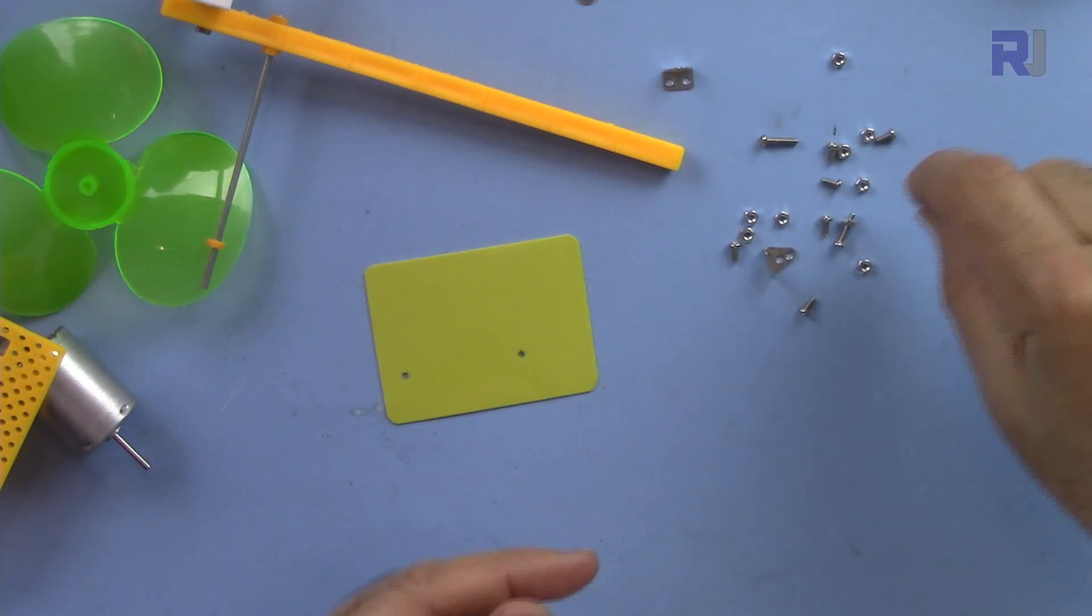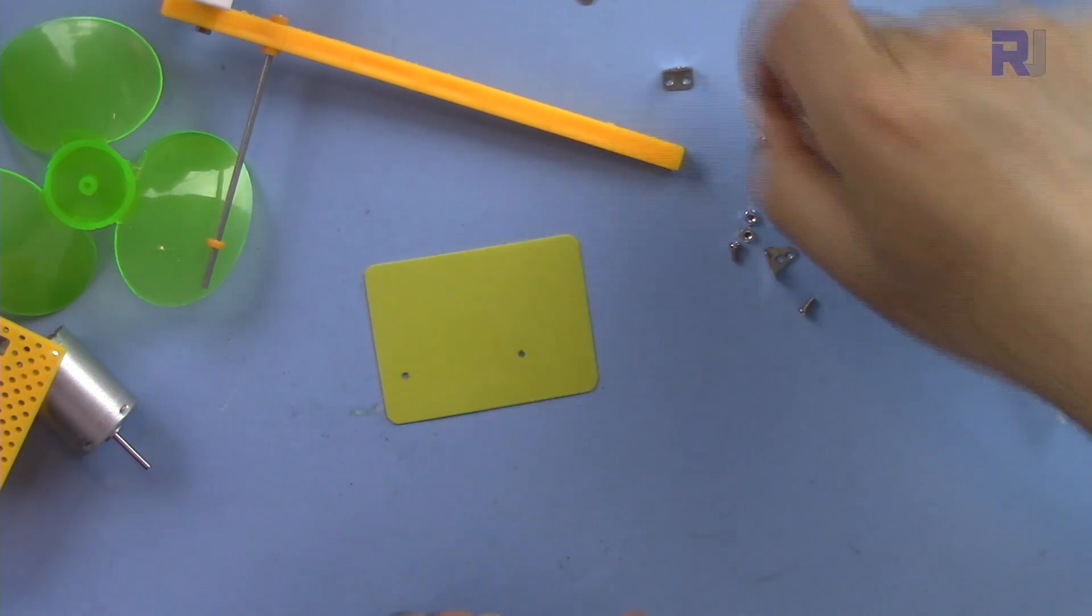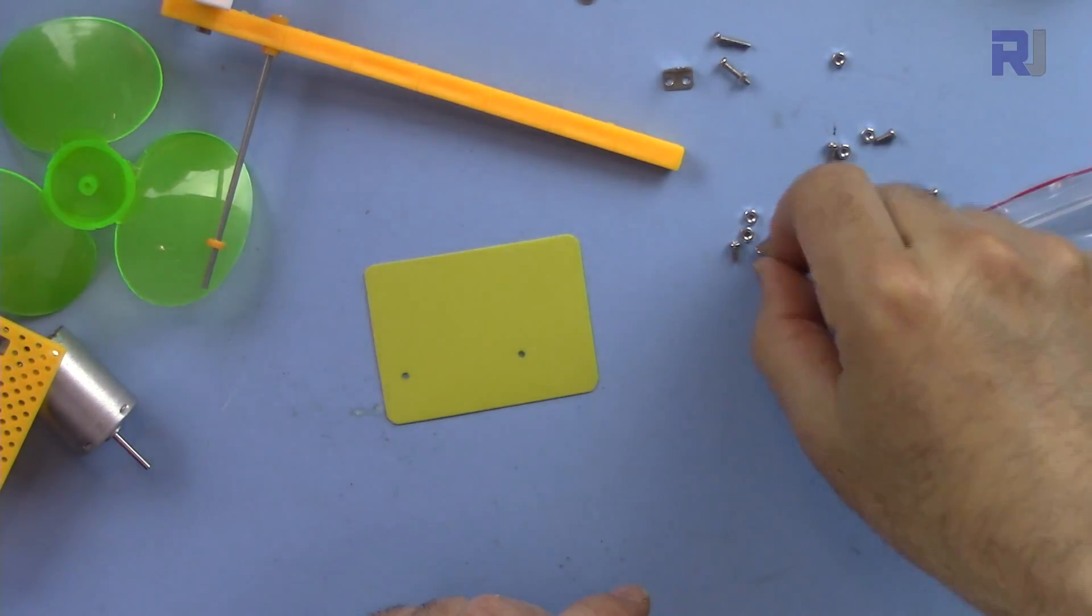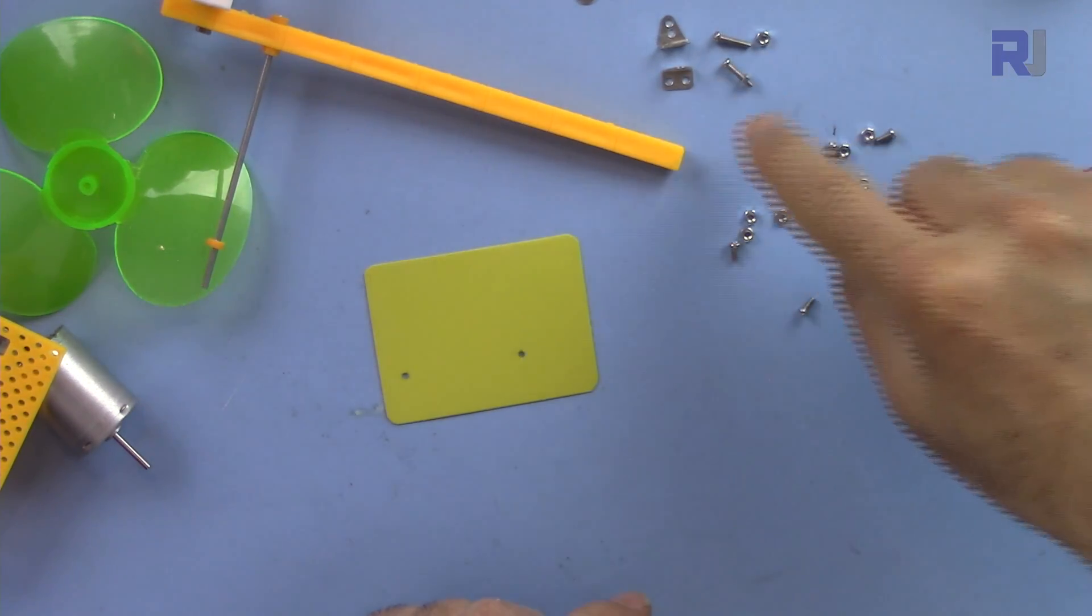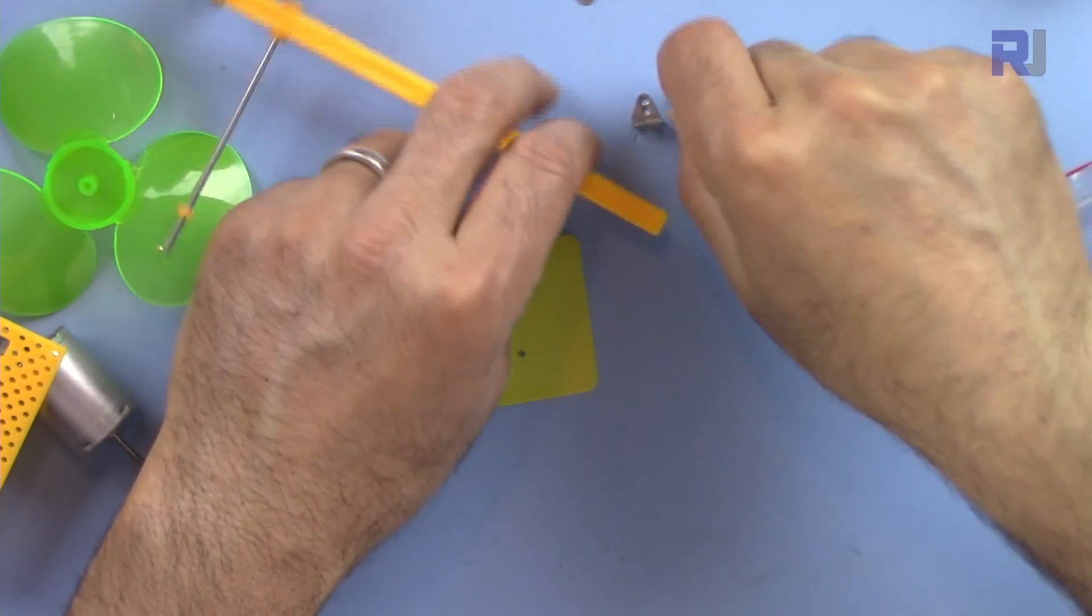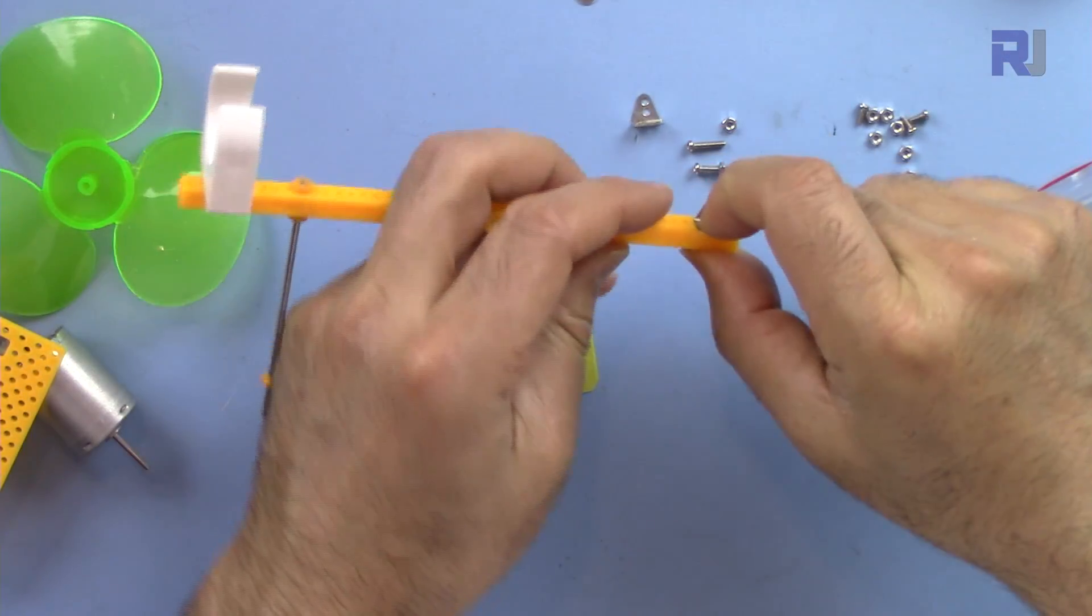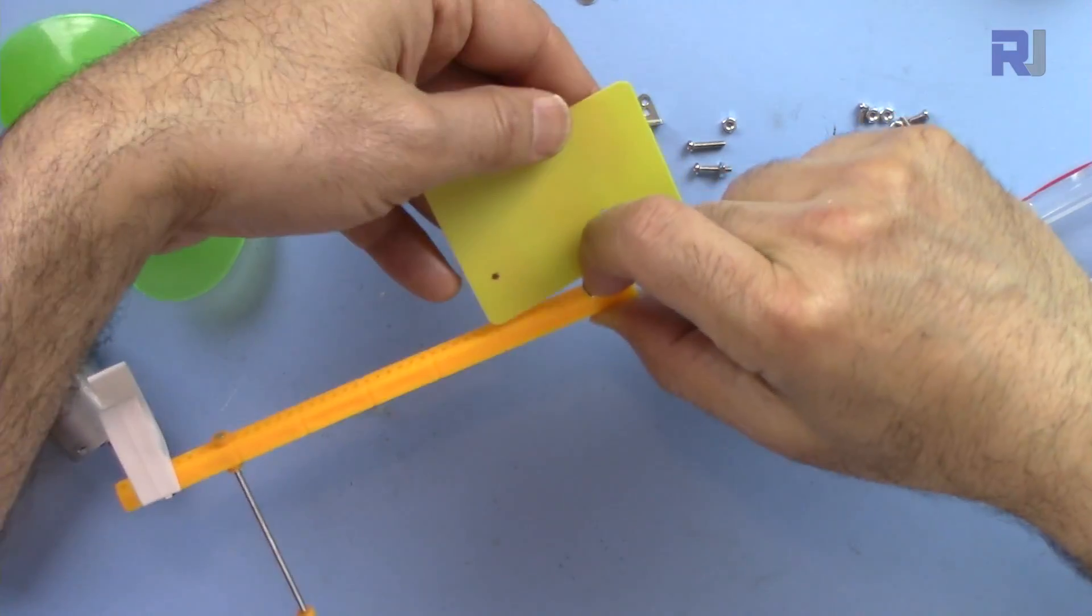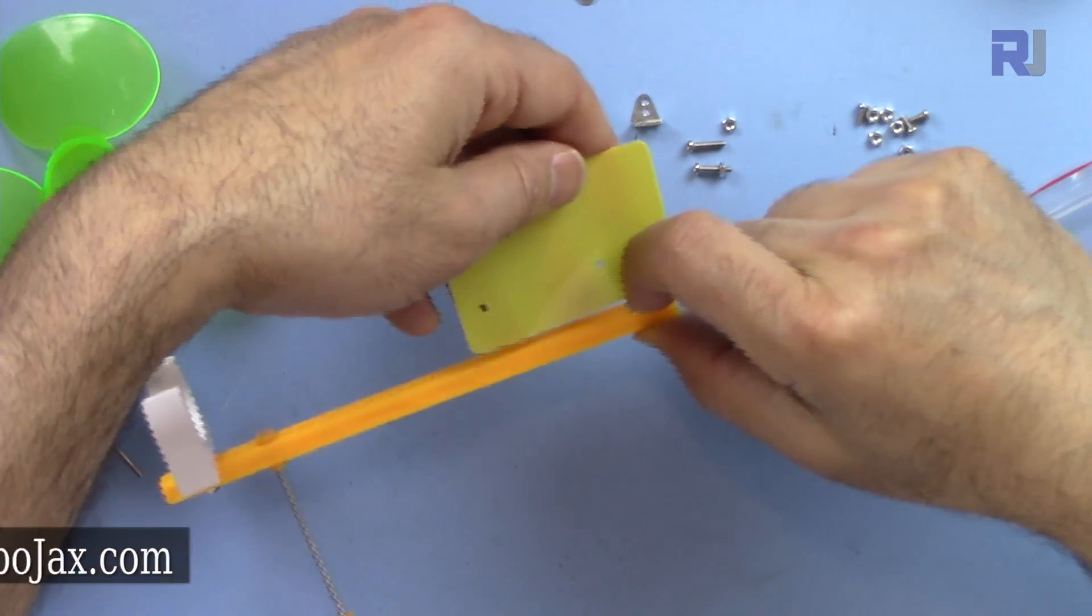So to attach this, I'm getting one of those long screws, one of these, and this one. So with this screw, let's attach it here. This will be holding this piece here to keep it in this direction.